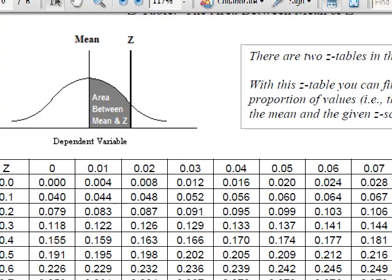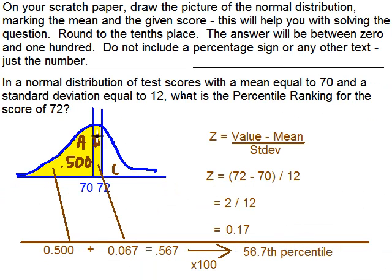We then went to the z-table for area between the mean and z, because that shaded area corresponded with the shaded area we were interested in. We found out that it was .067. We added that to the .50, multiply it by 100 to take our proportion and turn it into a percentage, and we ended up with 56.7th percentile.